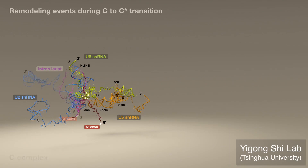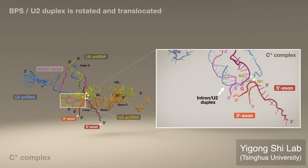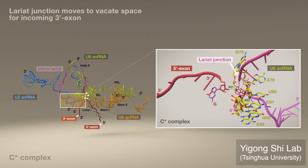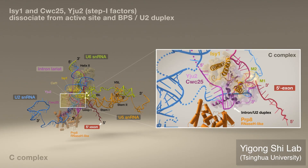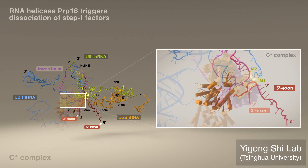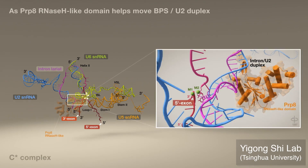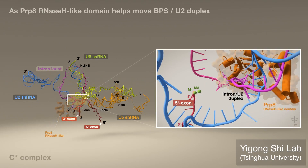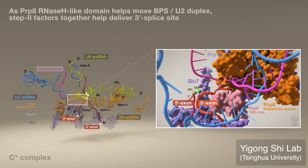During the C-to-C-star complex transition, several major remodeling events occur. While the BPS-U2 duplex is rotated and displaced, the lariat junction moves to vacate space for the incoming 3' exon. As a result, step 1 factors which were inserted into the active site and in direct contact with the BPS-U2 duplex are dissociated. These events are executed with the help of an RNA helicase, which presumably pulls the 3' end of the lariat to trigger the dissociation of step 1 factors and the translocation of the PRP8 RNase H-like domain. Consequently, the RNase H-like domain may help move the BPS-U2 duplex, and then step 2 factors, which move to interact with this domain, may together help deliver the 3' splice site into the active site.